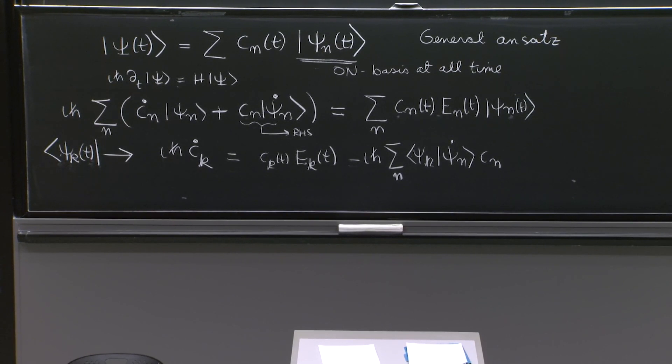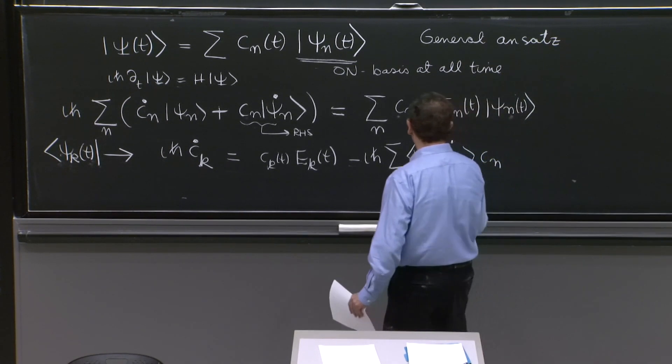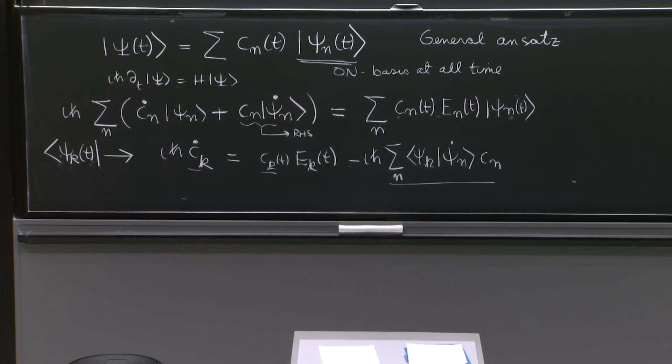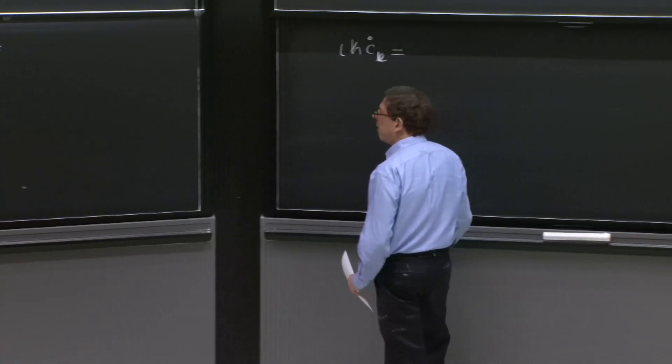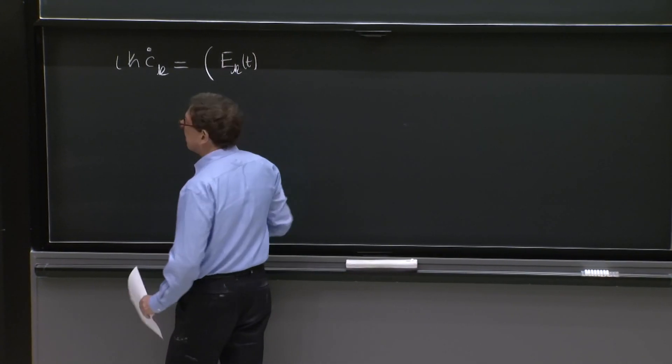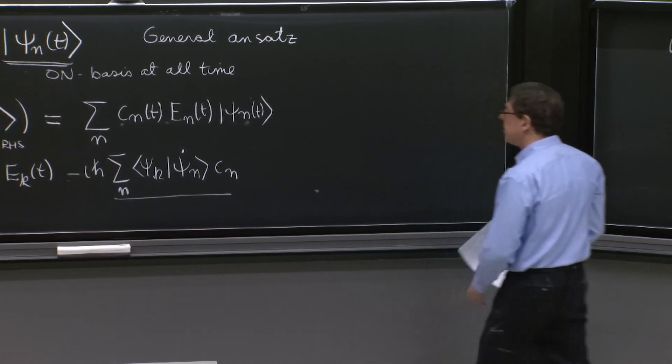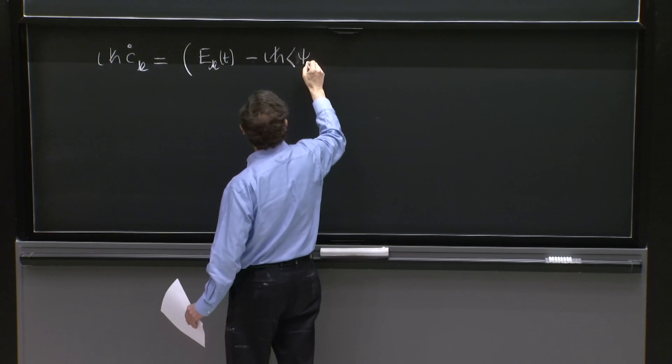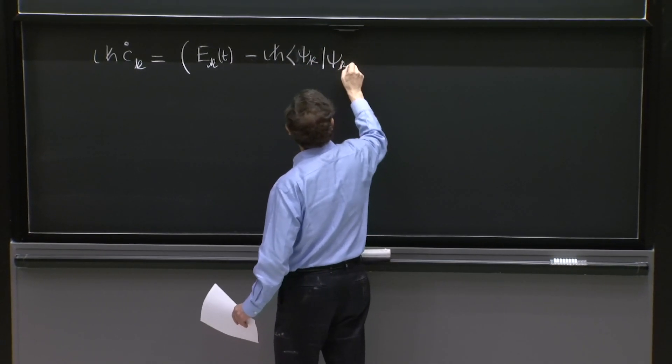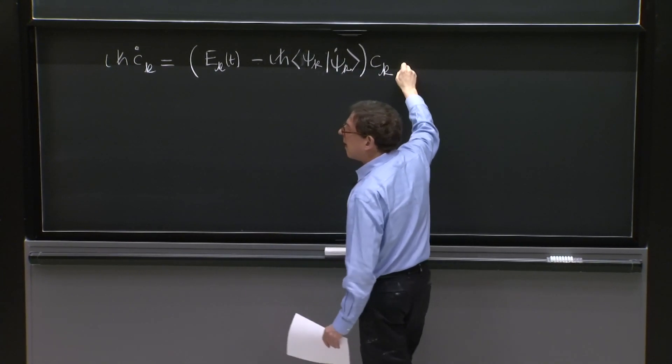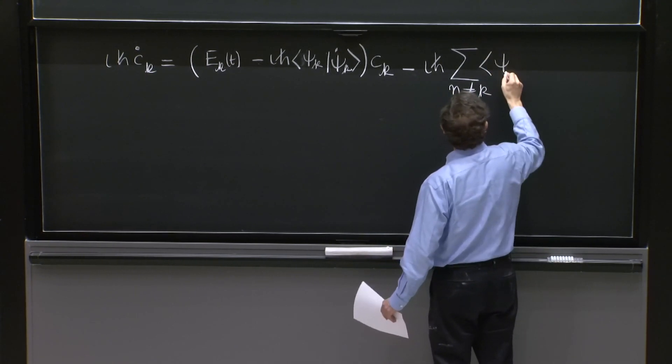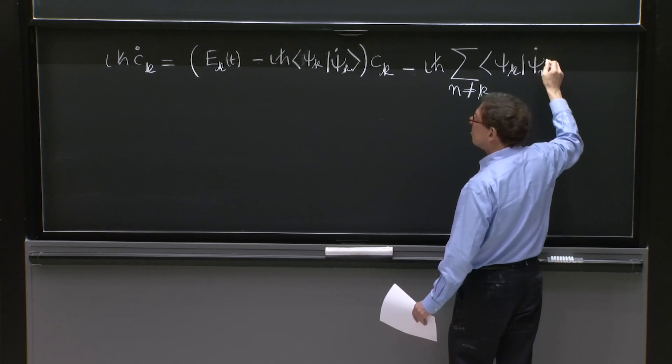That's pretty close to what we want, but let's write it in a slightly different way. I want to isolate the ck's. So from that sum, I will separate the ck part. We'll have ek of t, and there's going to be a term here when we have n equal k. So I'll bring it out there, minus i h bar psi k psi k dot ck.